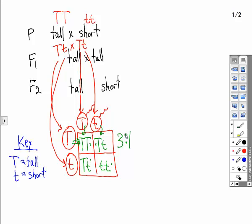If it asks for a genotype ratio, then it would be one homozygous dominant, that's this one, to two heterozygotes, these two, to one homozygous recessive, this one here.